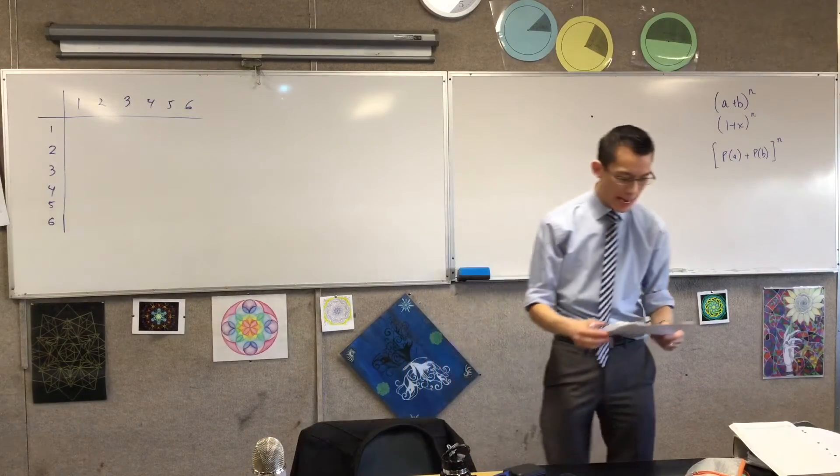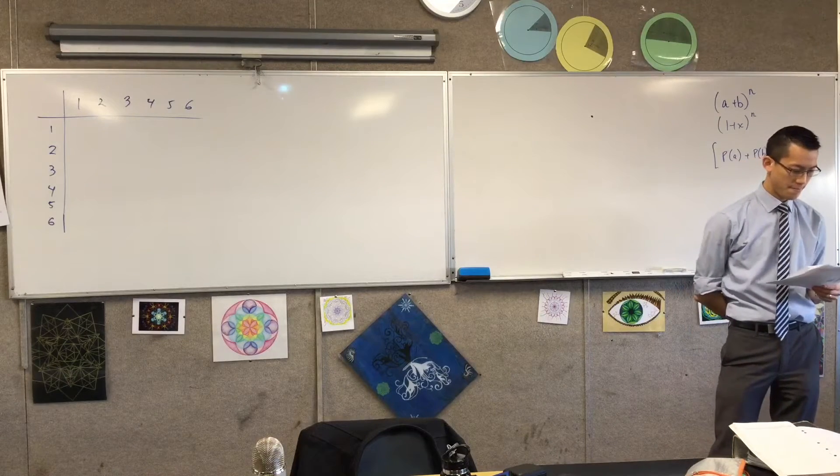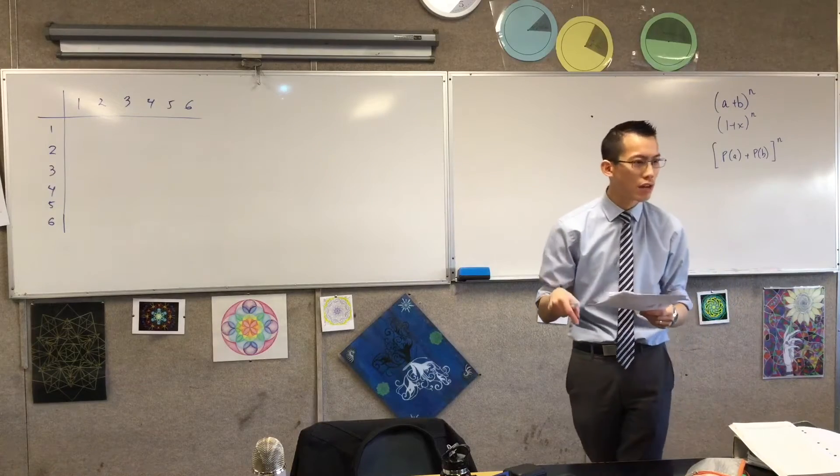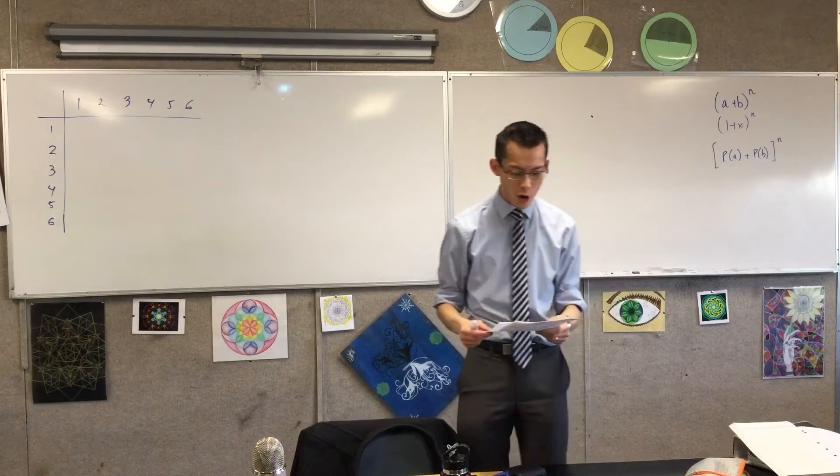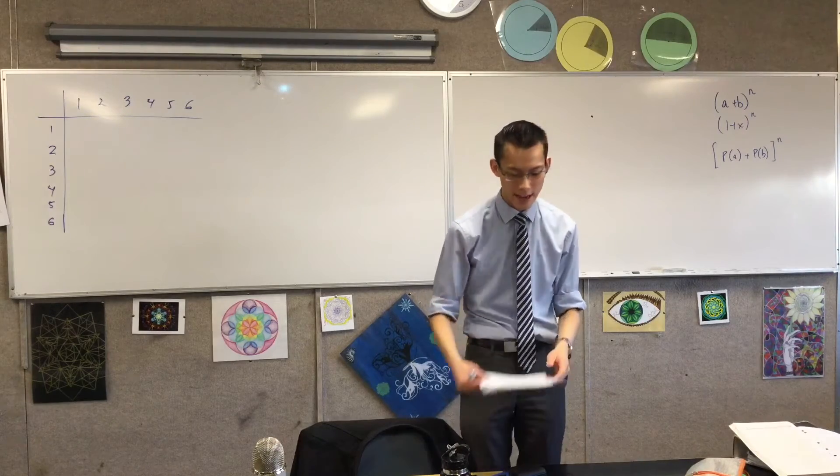When you have a look, just to scan down A through D, most of the questions are just about what are the individual numbers together. D is the only one where it's like, well, what's the sum? But I think that's easy enough for us to just add in our heads.